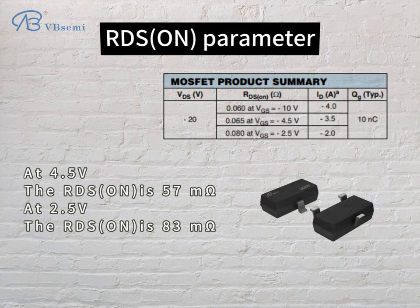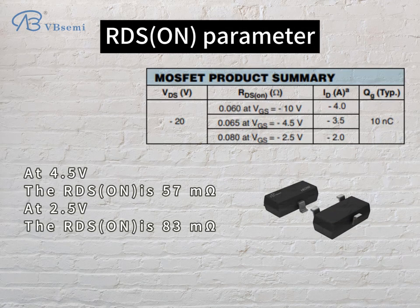RDS-ON parameter: at 4.5V, the RDS-ON is 57 mΩ. At 2.5V, the RDS-ON is 83 mΩ.